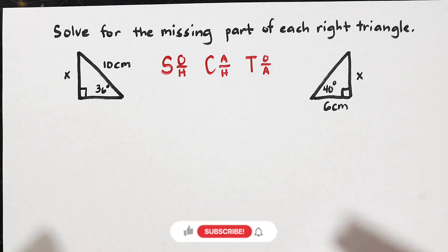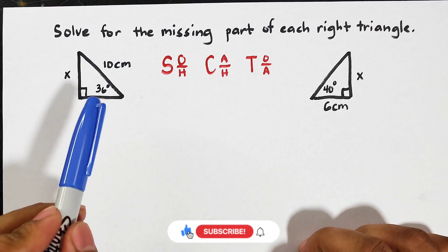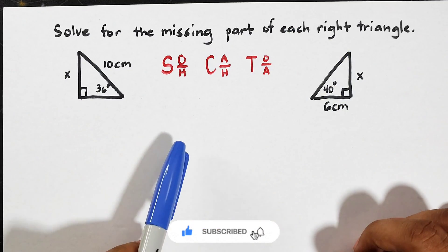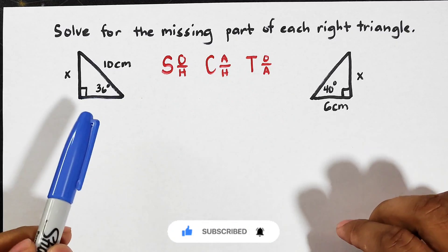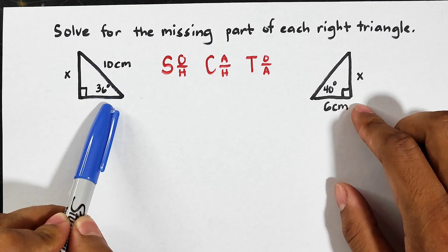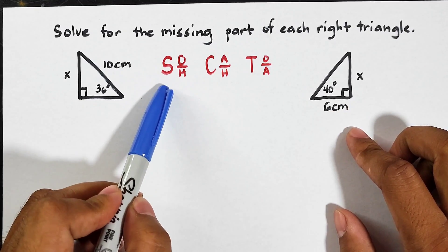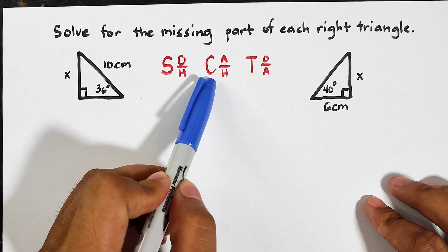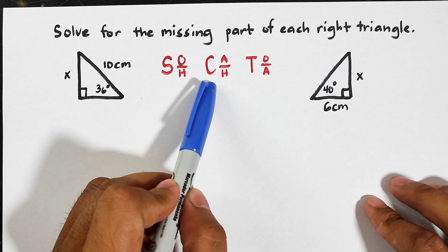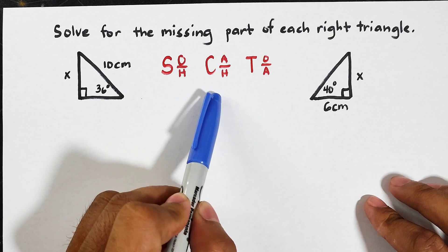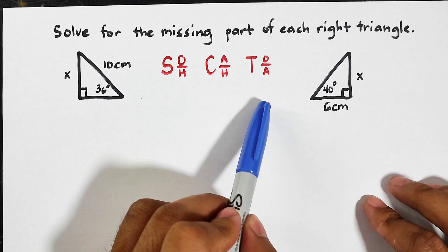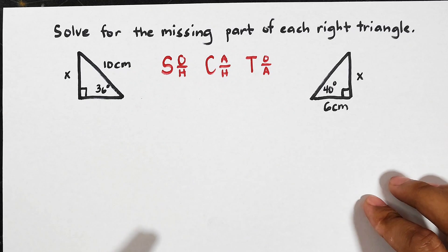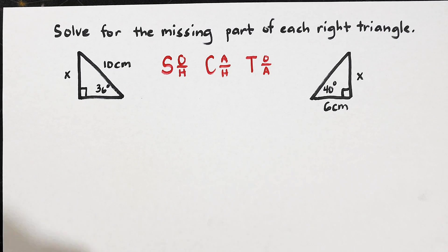What we have here are two examples for this video: to solve for the missing part of each right triangle using SOH-CAH-TOA. SOH stands for sine equals opposite over hypotenuse; CAH stands for cosine equals adjacent over hypotenuse; TOA stands for tangent equals opposite over adjacent.